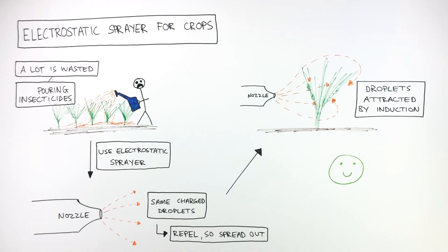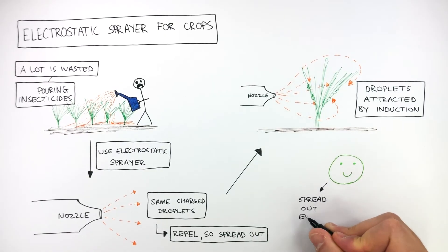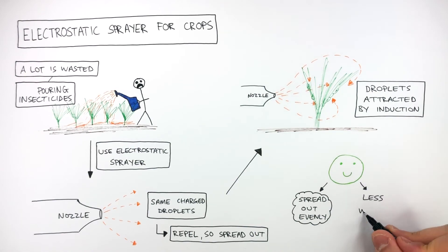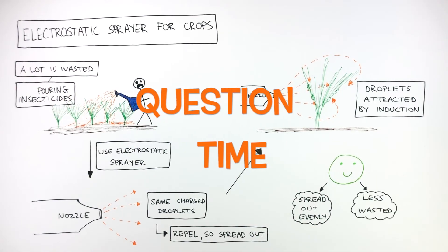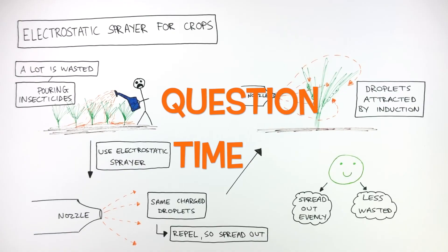Advantages of using an electrostatic sprayer for crops are that the droplets spread out evenly and less is wasted. It's question time — attempt these questions to check your understanding.